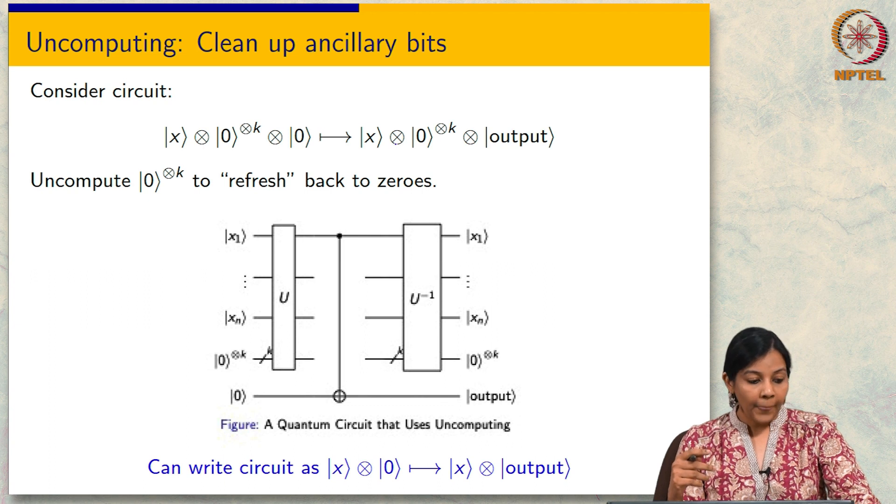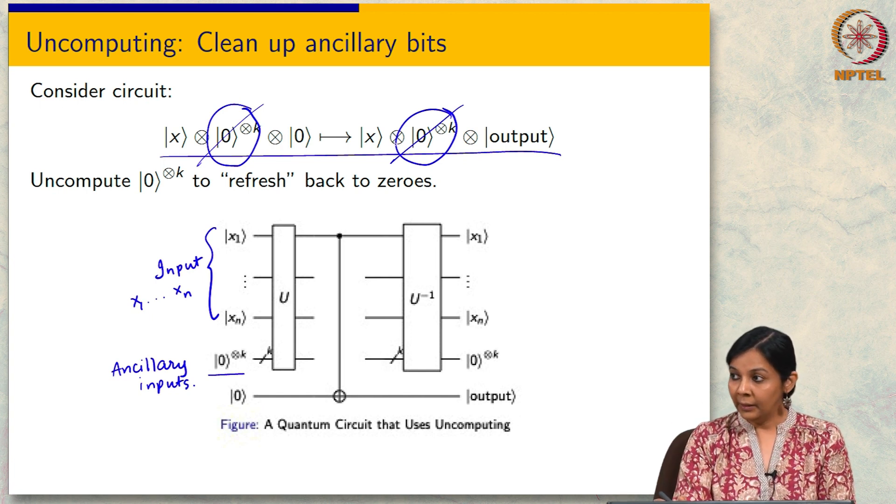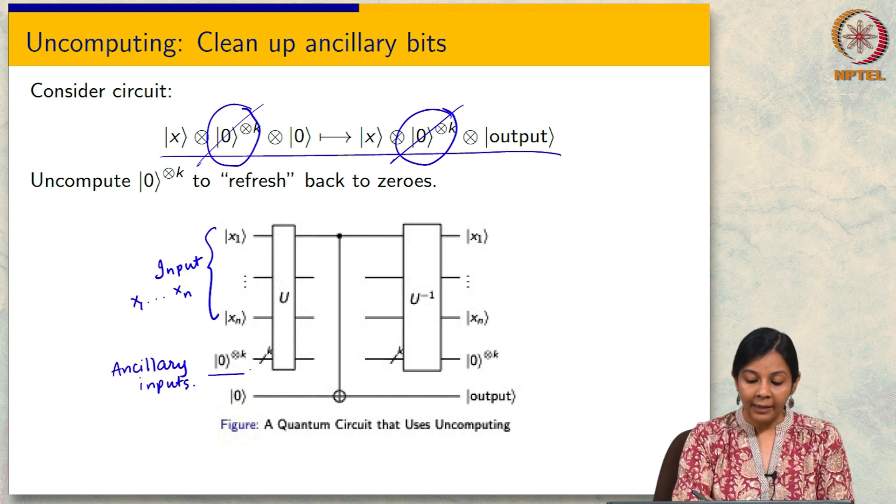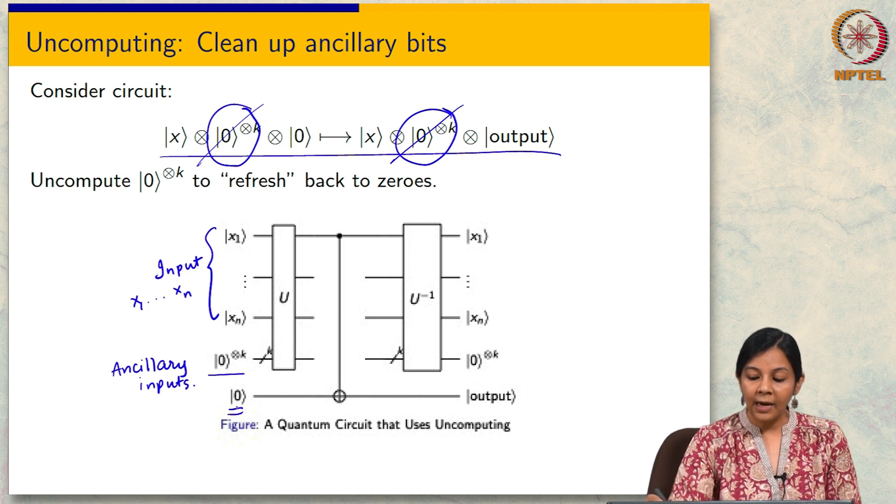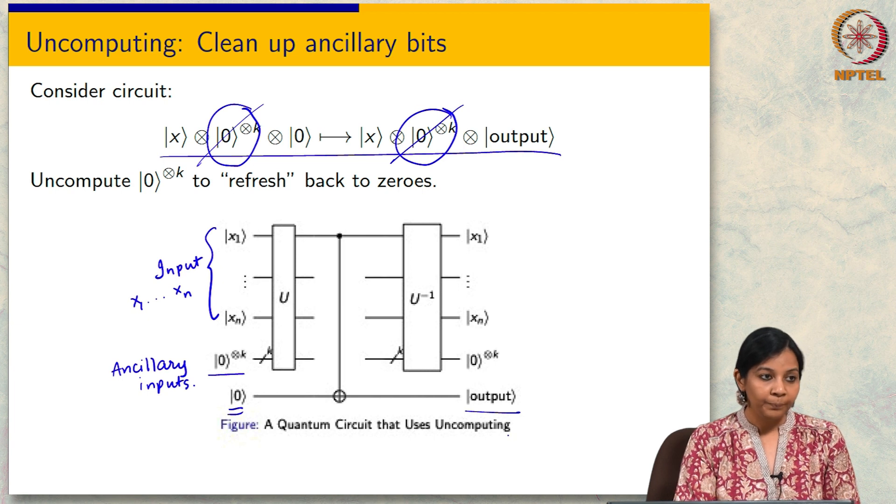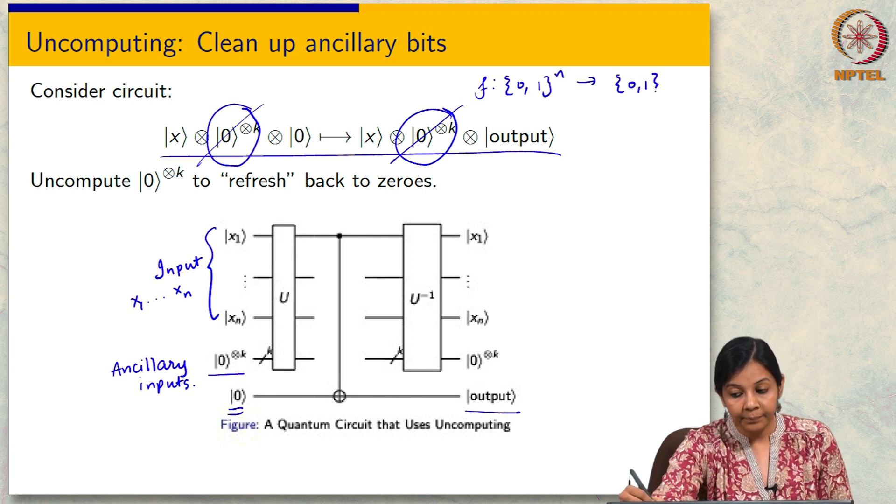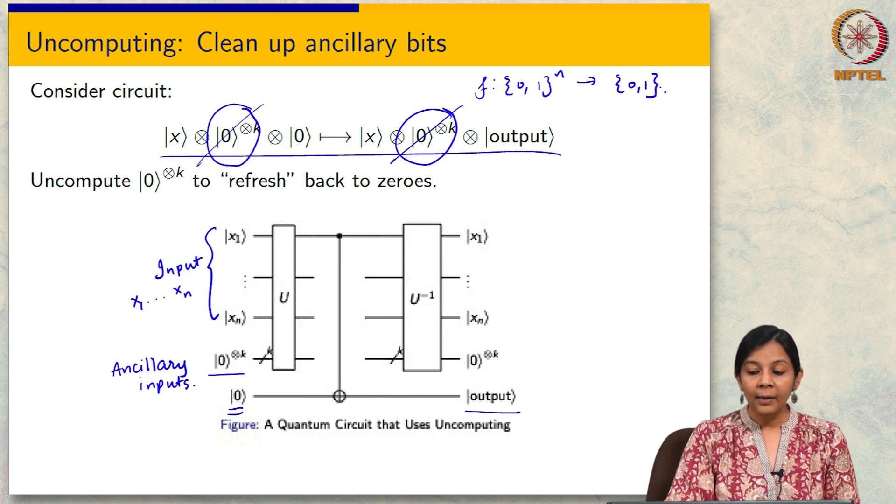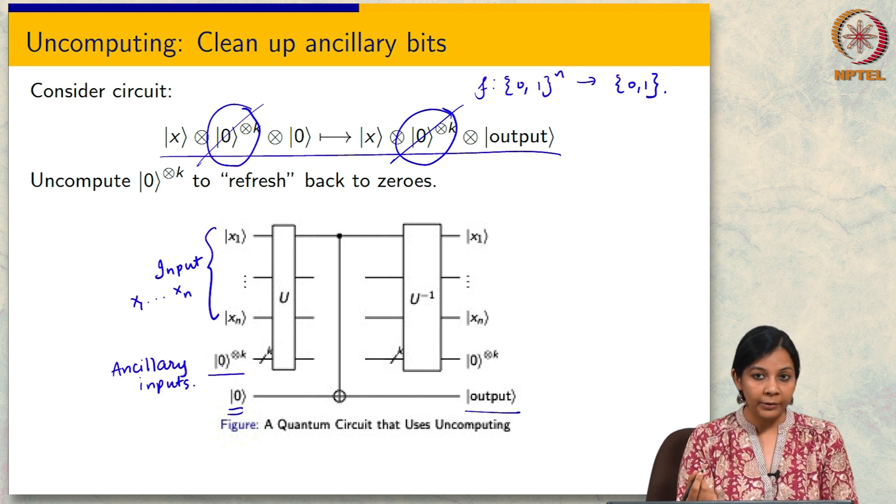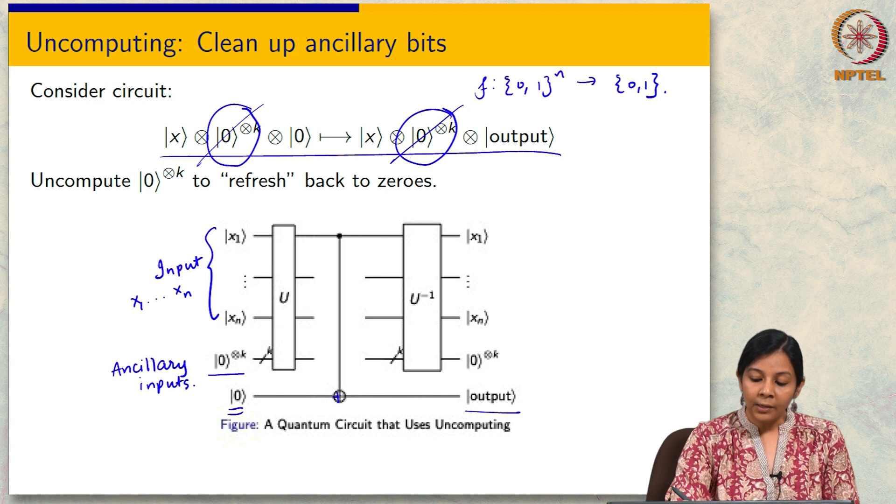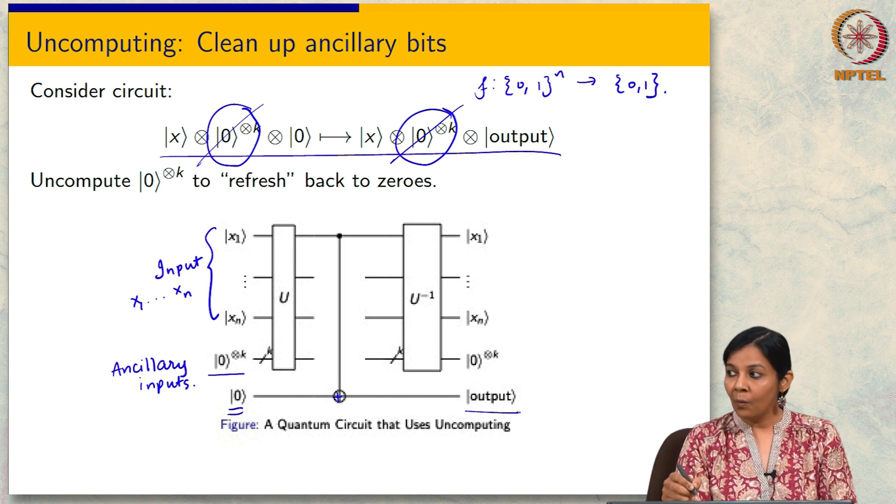It is because I can uncompute these ancillary bits. If you see in this picture what is happening, I have some input, I have some ancillary inputs, and here I have a register which I used to copy the output. I am using the C-NOT gate to copy the output. I am thinking of a function f from {0,1}^n to {0,1}. I am using these k extra 0s in order to perform this computation.